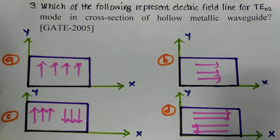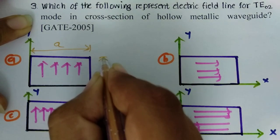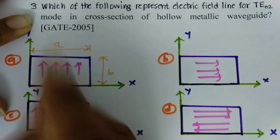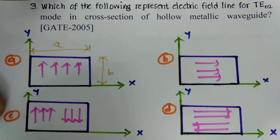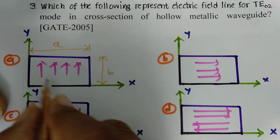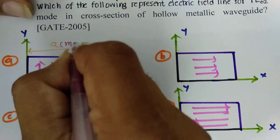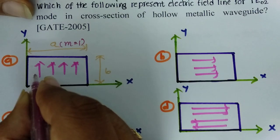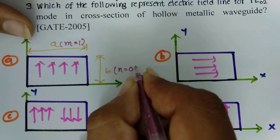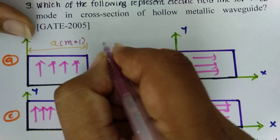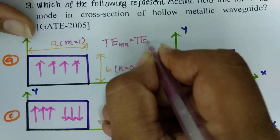For this waveguide, A is the broader dimension and B is the smaller dimension. Looking at the electric field variation — it occurs once with respect to A, so M = 1. There is no variation of electric field with respect to the horizontal dimension, so N = 0. This mode of propagation is TE10.